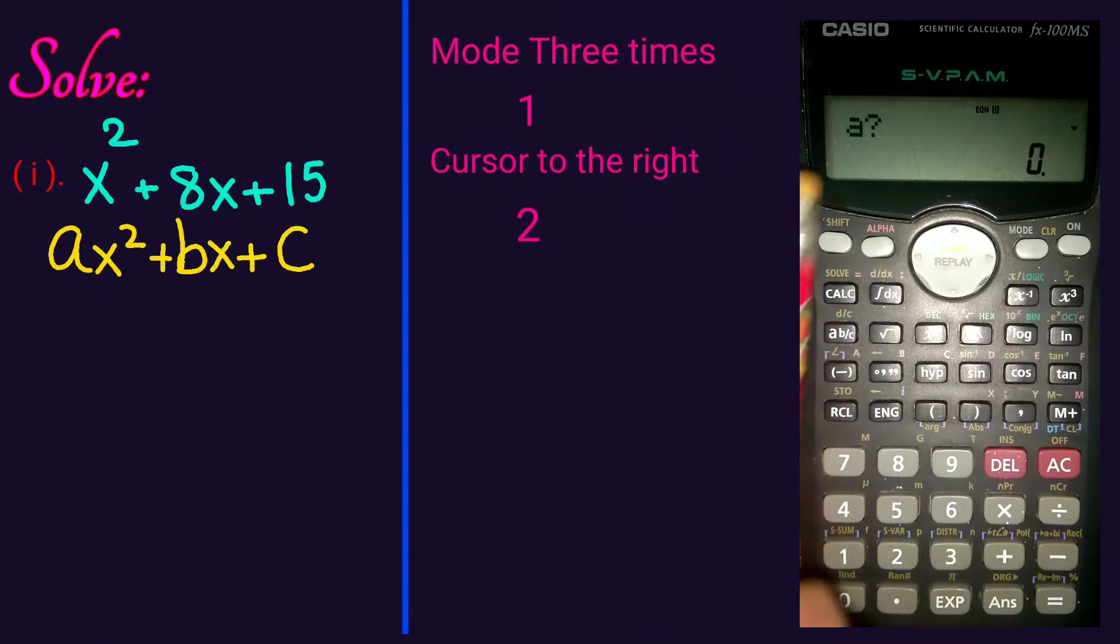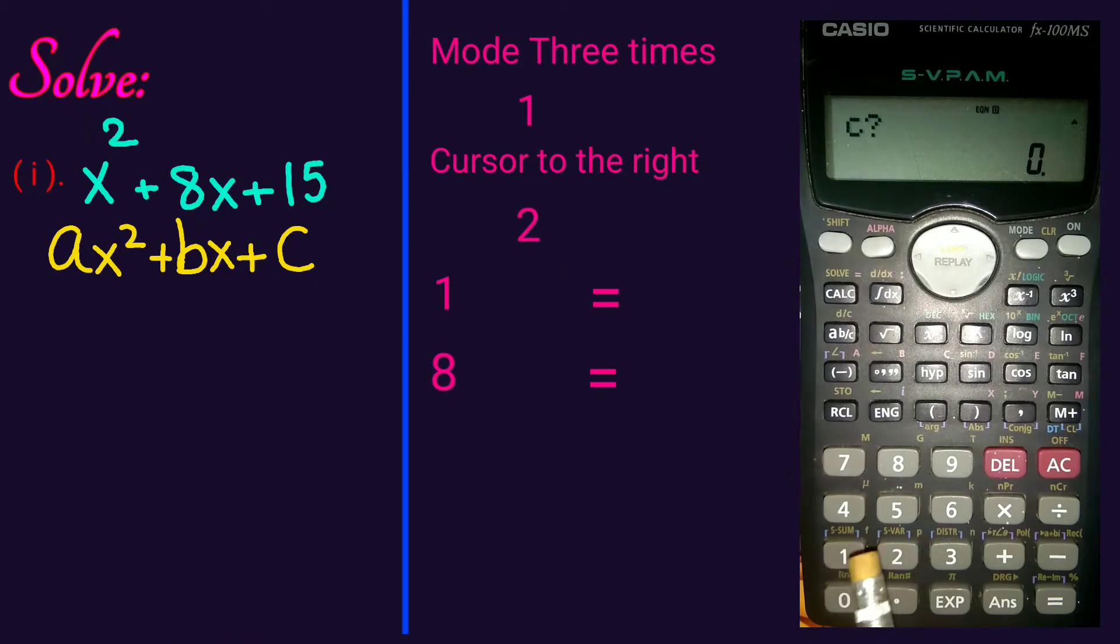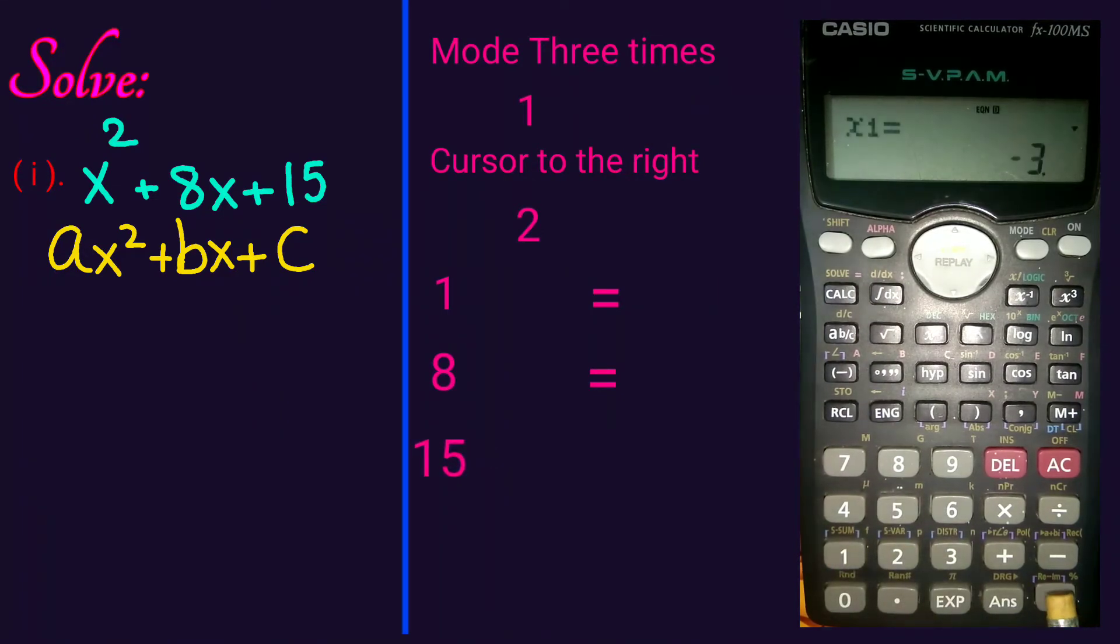The value of a is 1. Press 1 and equal key. The value of b is 8. Press 8 and equal key. The constant value is 15. Press 15 and equal key.